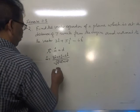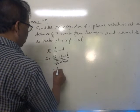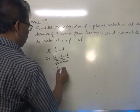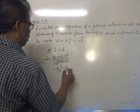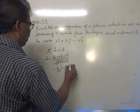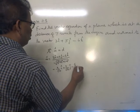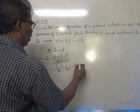That is 3 by root 70 i cap plus 5 by root 70 j cap minus 6 by root 70 k cap.